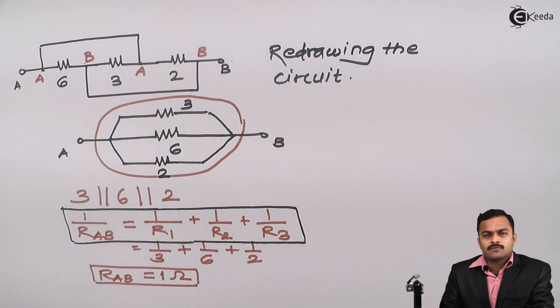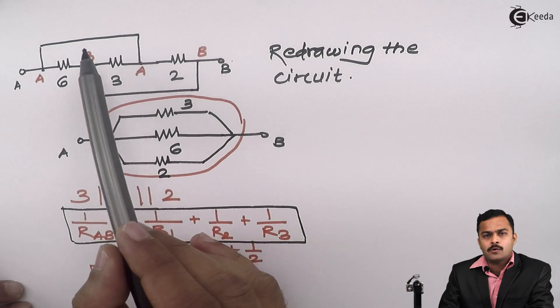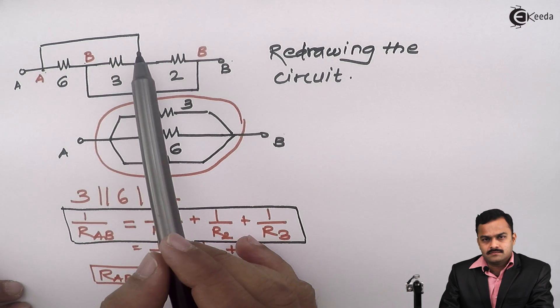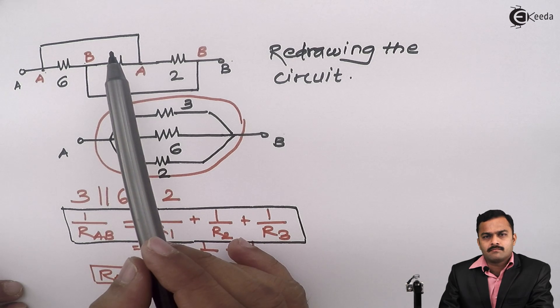So this was another important problem that we have discussed, where sometimes we will not get series and parallel connections directly given. You need to apply some concept like this. If there is no element connected between two points of the circuit, those two points are nothing but the same points. Further we will solve more numerical based on this. Thank you.